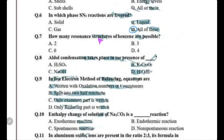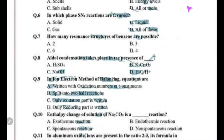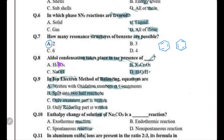How many resonance structures of benzene are possible? For benzene, only two resonating structures are possible. The pi bond can be moved to a position — this is the first structure — and then it shifts back to the second structure. The double bond either shifts to one form or the other, so these are the two possible resonating structures for benzene.